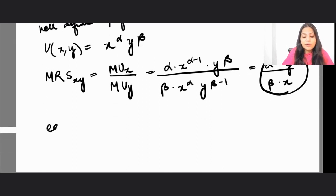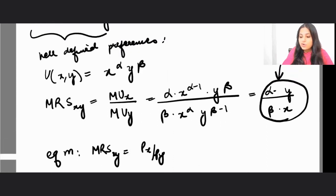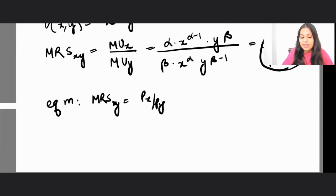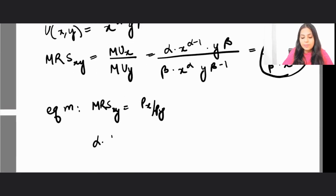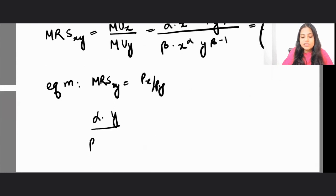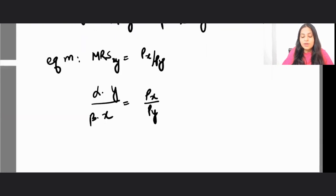Now, if your utility function is defined in this manner, then where do you attain your equilibrium? Equilibrium was attained wherever MRS_xy is equal to px by py.